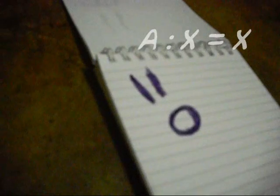In any proportion, the product of the means is equal to the product of the extremes. In the proportion A is to X is equal to X is to B, X is the mean proportional between A and B.